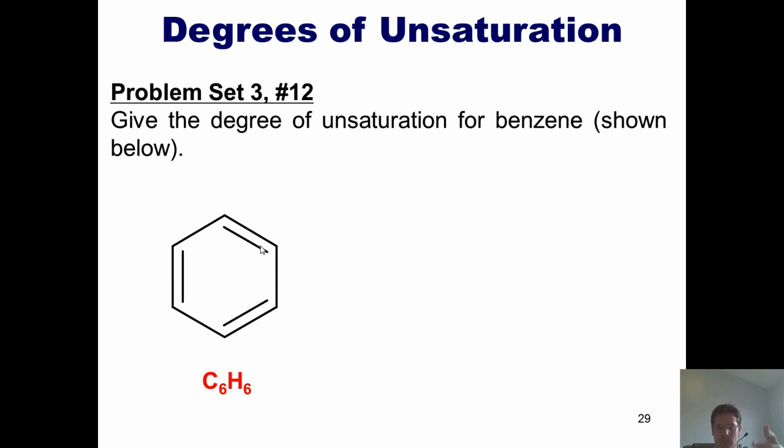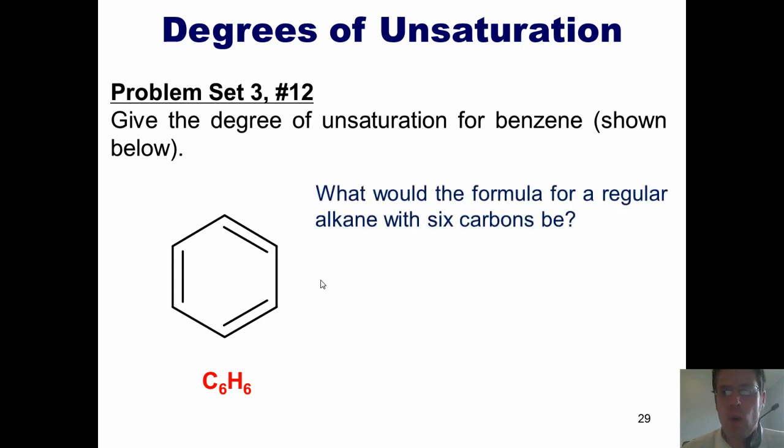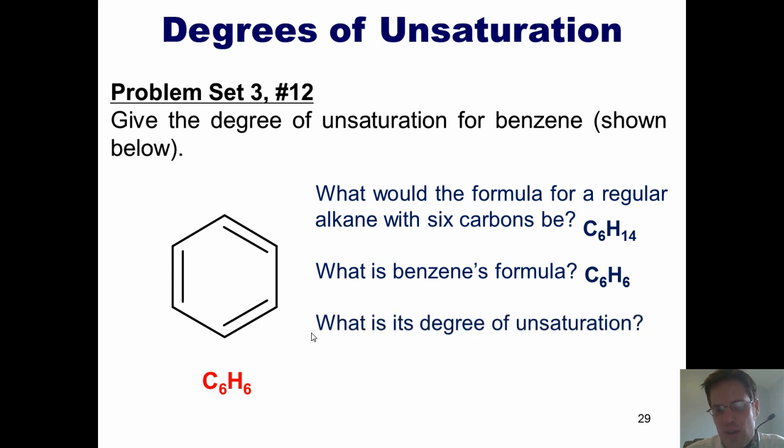Can I use the formula to do it? Well, sure. The way I do that is by asking myself the question, what would the formula for a regular alkane with six carbons be? In other words, if this were C6H2n plus 2, it would be C6H14. What is benzene's formula? Well, it's C6H6. So, what is its degree of unsaturation? 14 minus 6 divided by 2, which equals 4, which is once again the total number of extra bonds and rings in this particular compound.